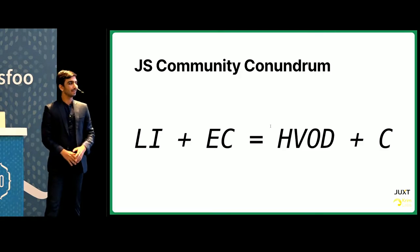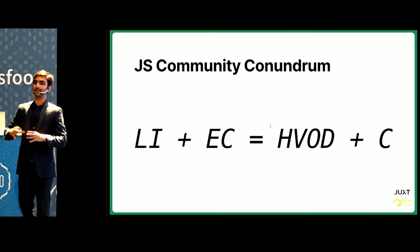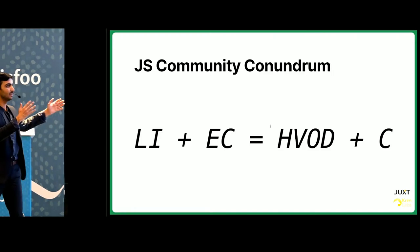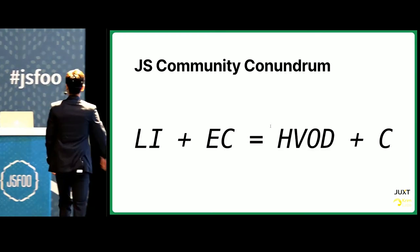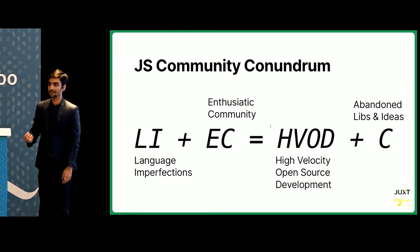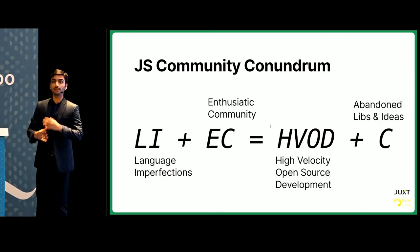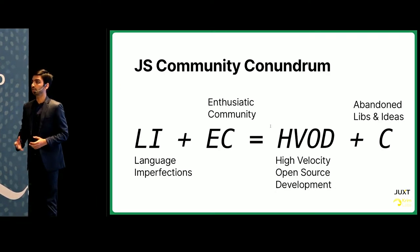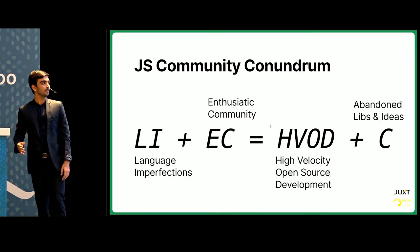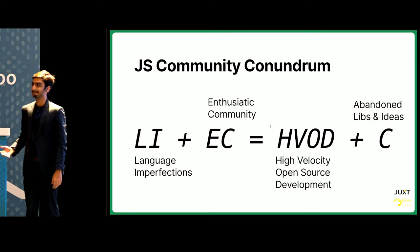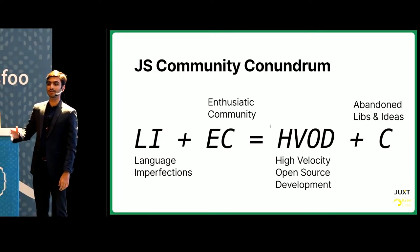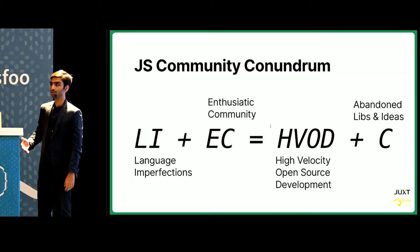I researched the problem and was able to put the issues of the JS community into a highly scientific equation: the language itself is imperfect, but the community is very talented and enthusiastic. That leads to high-velocity open-source development and a ton of abandoned libraries and ideas. I think there are 50 versions of state management similar to Redux.